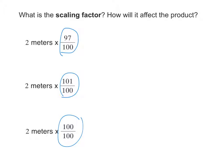So let's take a look. In this example, the first one, 2 meters times 97 over 100. If the scaling factor of 97 hundredths, what do we know about that? We always compare the scaling factor to what magic number? One. So in this case, 97 hundredths, is that greater than 1 or less than 1?